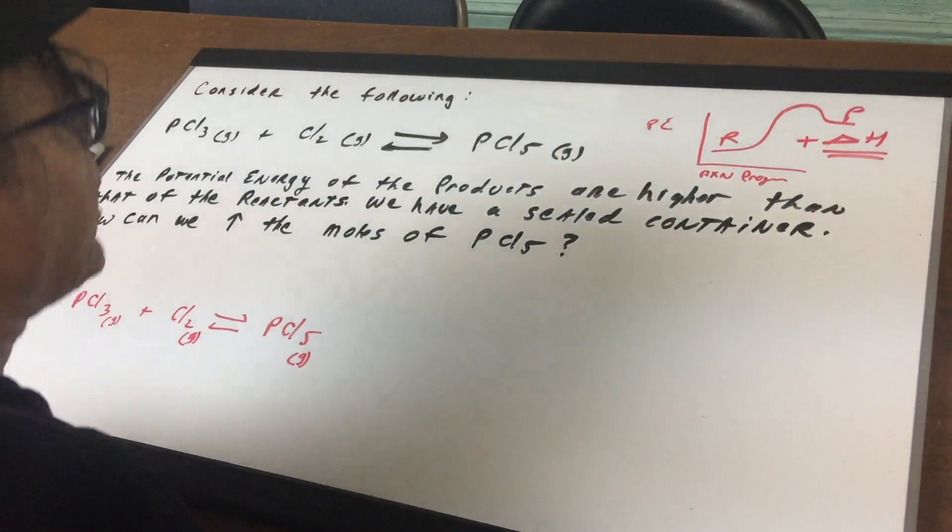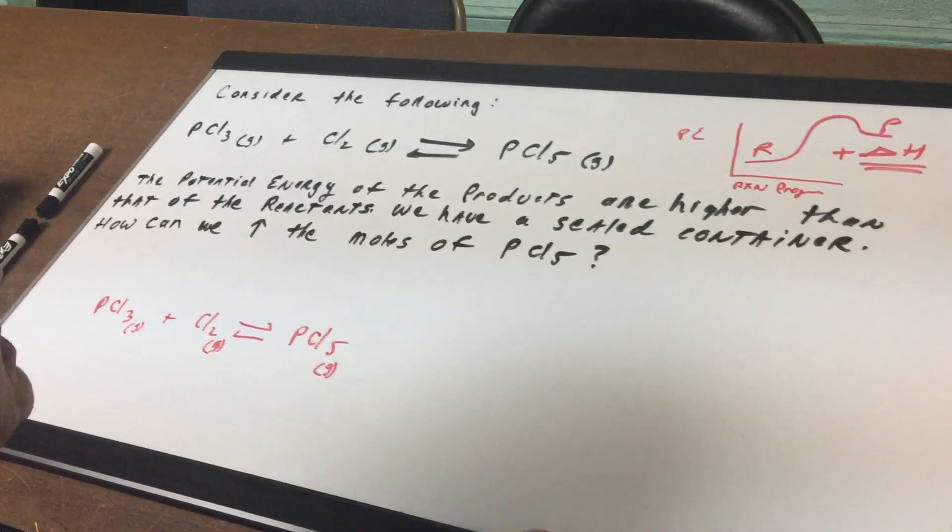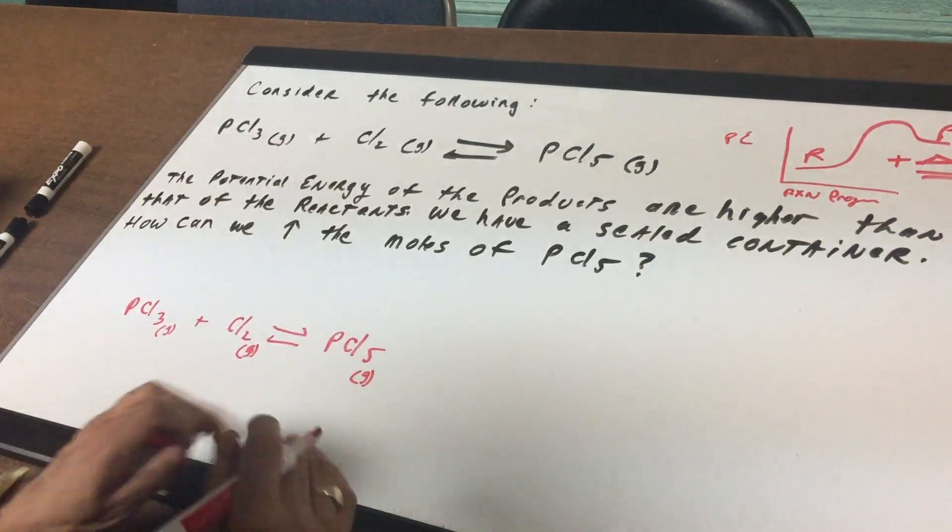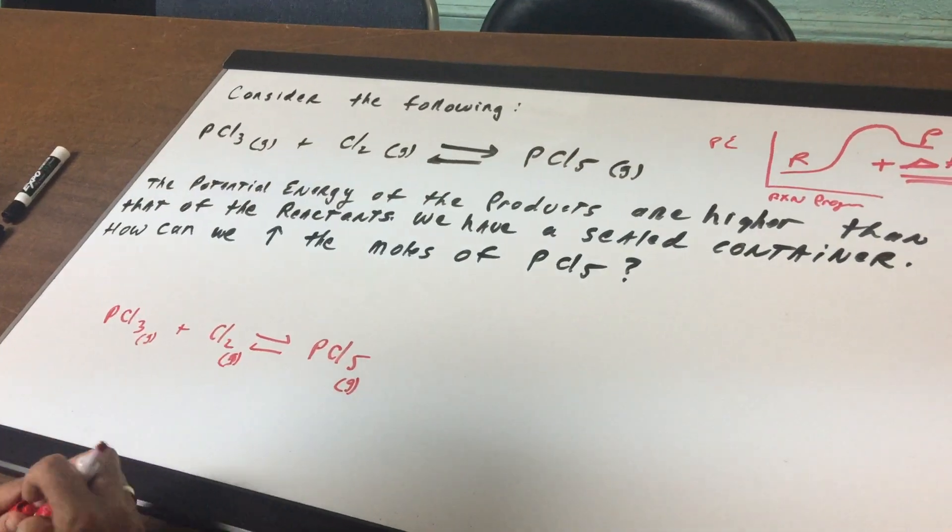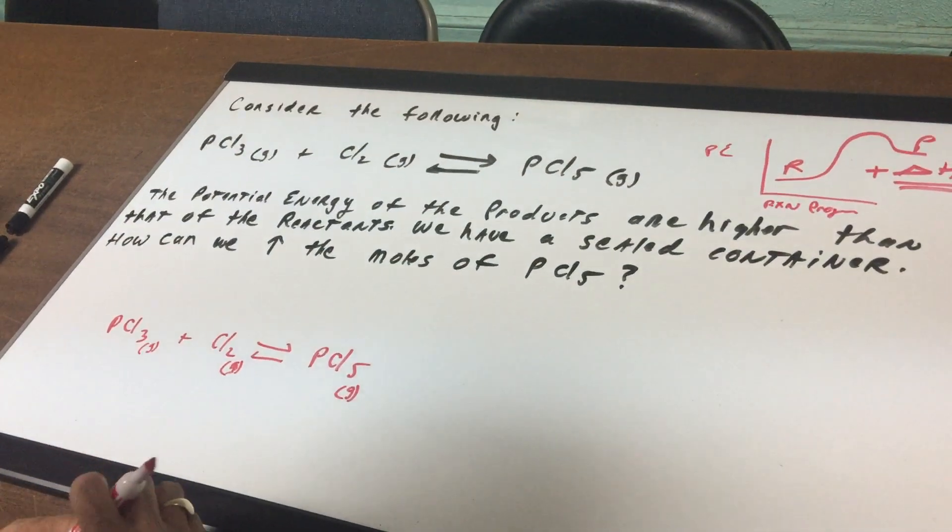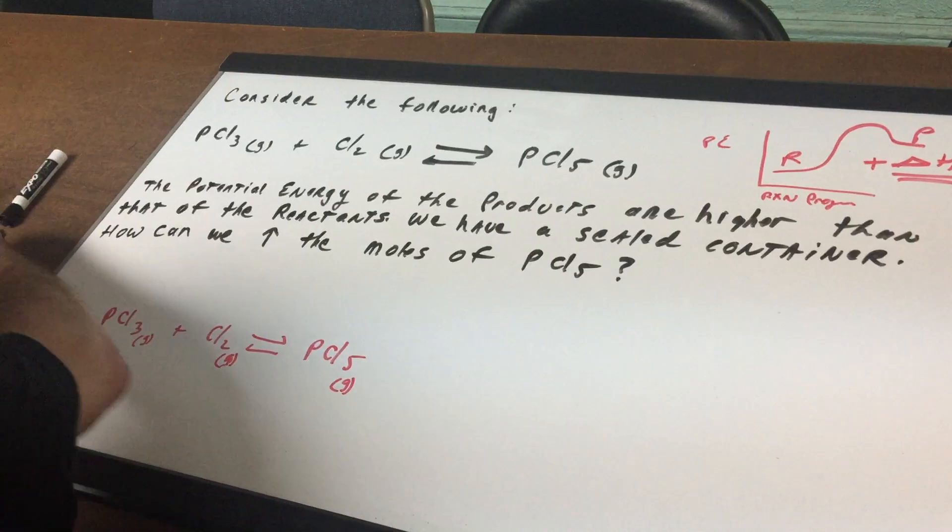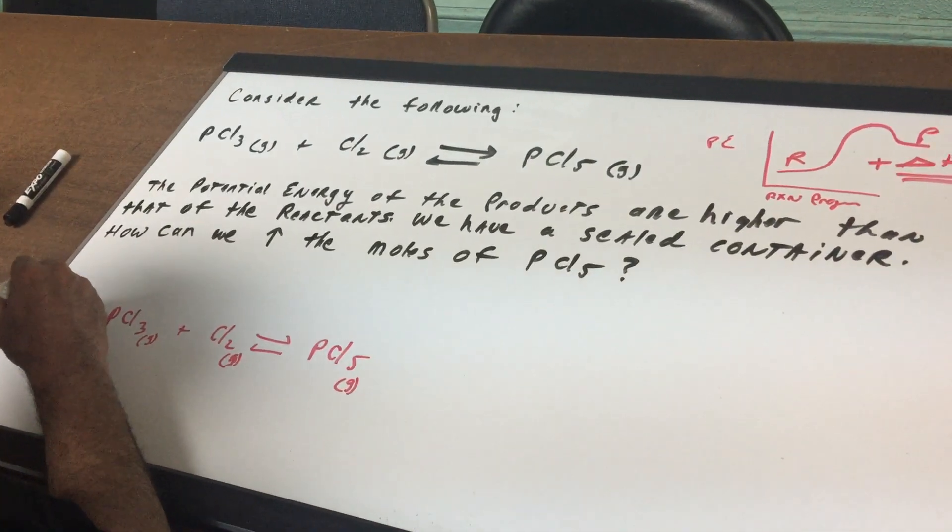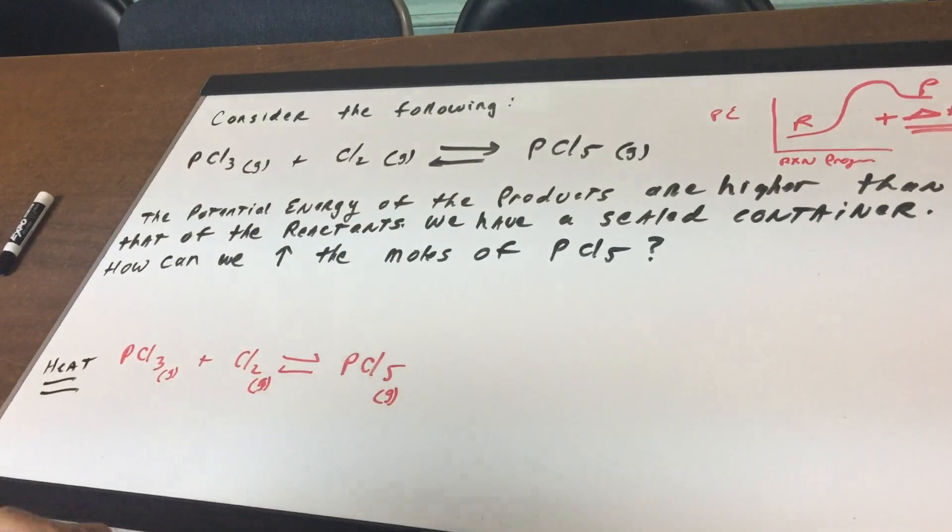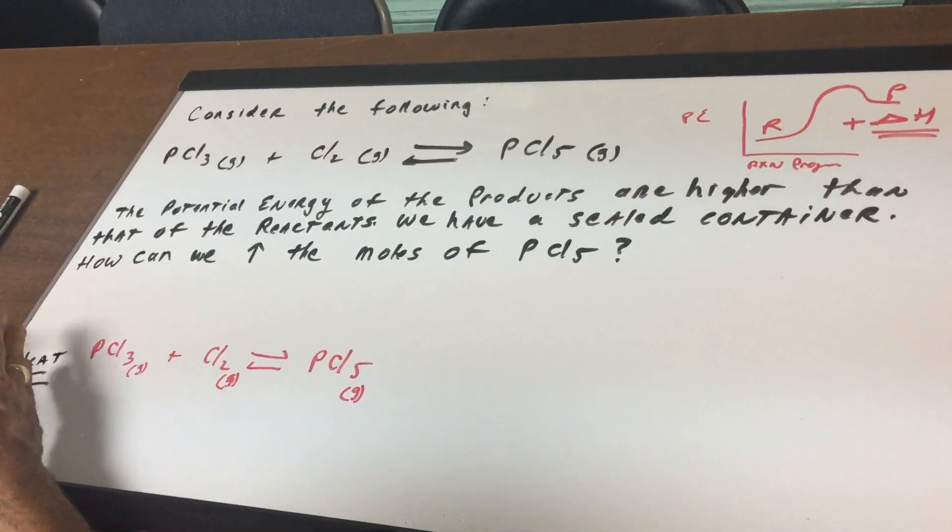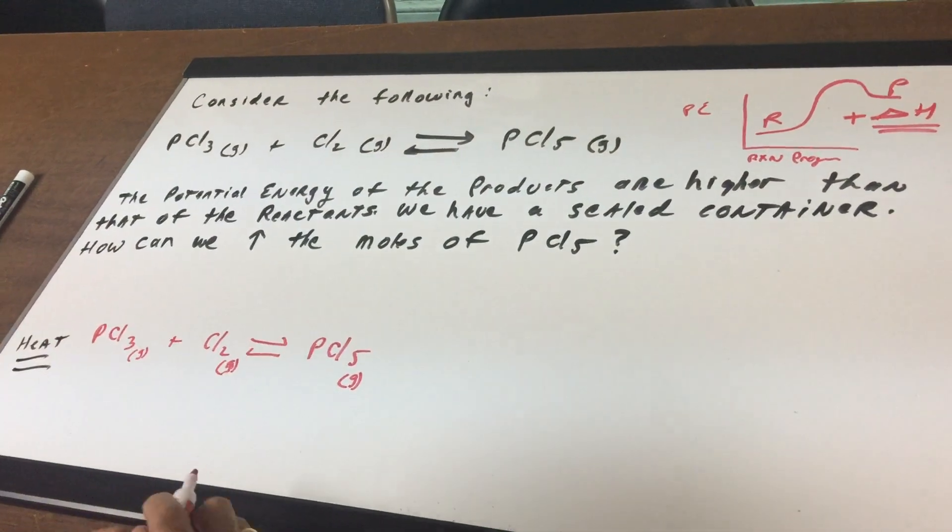Now the first thing to do equilibrium problems is to set yourself up. Let's draw the equation again. So we draw the PCl3 plus chlorine to get PCl5 and it's endothermic. So what I do if it's endothermic, I put the heat on the left side. The left side simply means that heat is being added and that's what endothermic means.